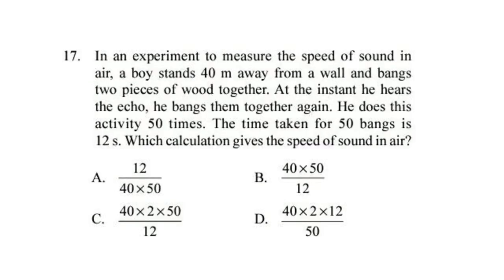Question 17. In an experiment to measure the speed of sound in air, a boy stands 40 meter away from a wall and bangs two pieces of wood together. At the instant he hears the echo, he bangs them together again. He does this activity 50 times. The time taken for 50 bangs is 12 seconds. Which calculation gives the speed of sound in air? Correct answer is option C. 40 into 2 into 50 divided by 12.